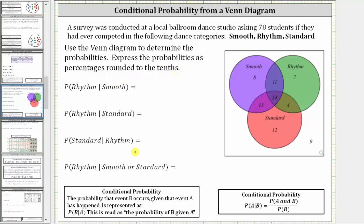Notice how we have conditional probability here. Looking at our notes below, the probability that event B occurs given that event A has happened is represented using this notation here, which is read: the probability of B given A, or the probability of B given A has occurred. We can also use a formula to determine conditional probability, but in our case it'll be easier just to use the Venn diagram.